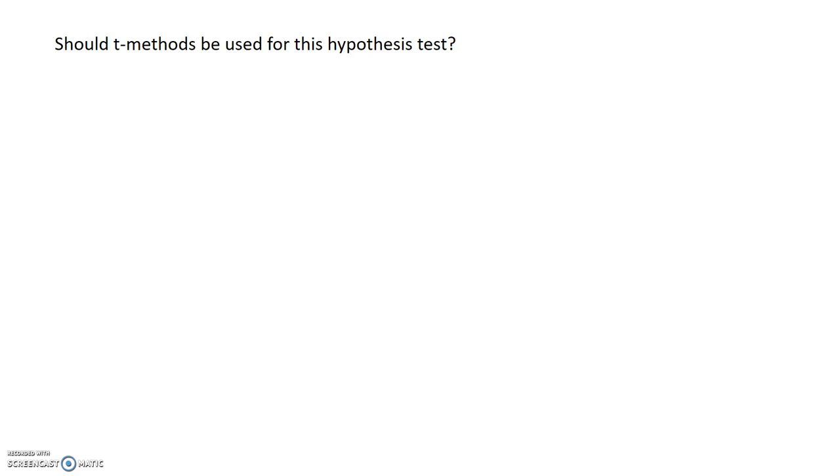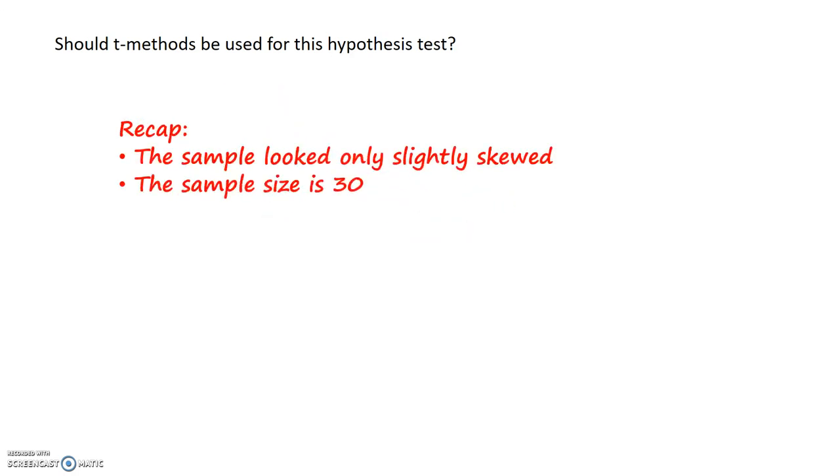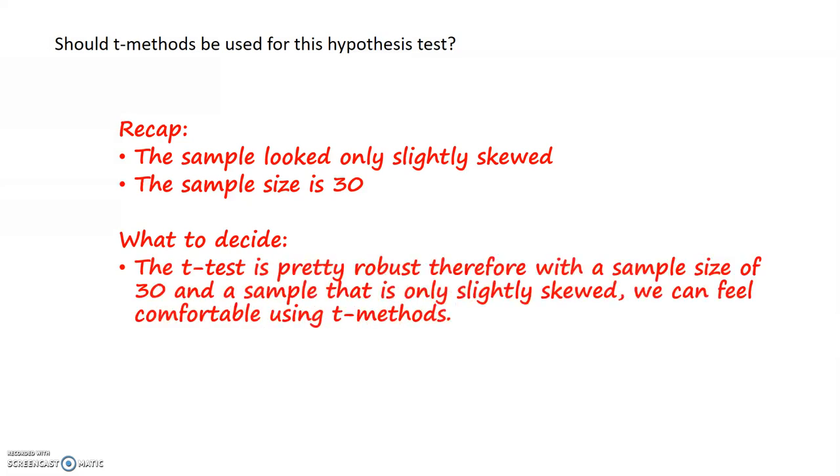Should T methods be used for this hypothesis test? My sample looked only slightly skewed, and my sample size was 30, which is right on the edge of being large enough. Therefore, my decision would be that a T test is a pretty robust test. With a sample size of 30 and a sample that is only slightly skewed, we can feel comfortable using the T methods.